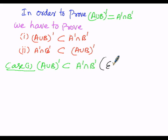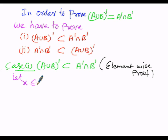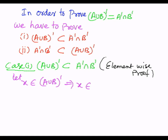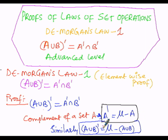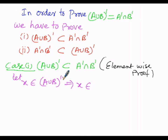To prove by element-wise proof, we assume an element x belongs to the LHS, that is x ∈ (A∪B)'. Since (A∪B)' = μ minus (A∪B), x belongs to μ minus (A∪B). This means x belongs to μ but A∪B is subtracted from μ, so x belongs to μ but x does not belong to (A∪B).